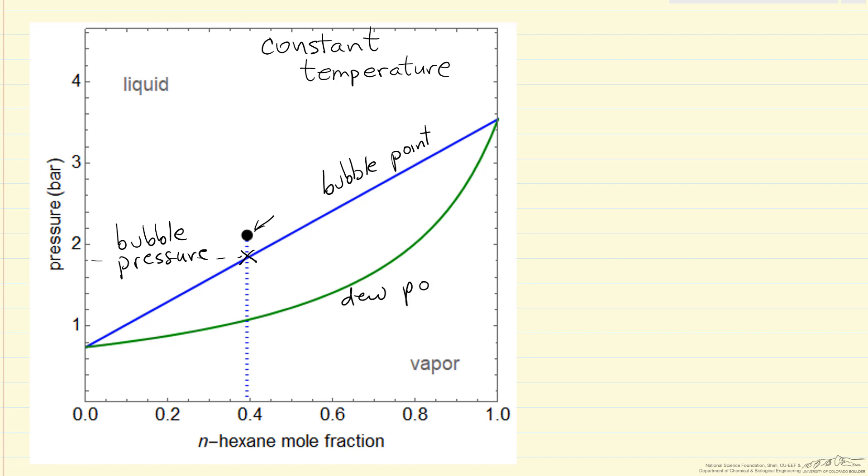Likewise, this is the dew point line. And for this composition, this would be the dew pressure for this temperature and composition. These two lines are also generated just using the Raoult's Law equations and knowing the pure component saturation pressure.